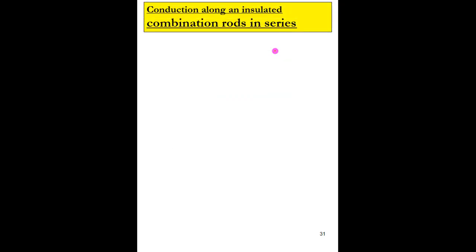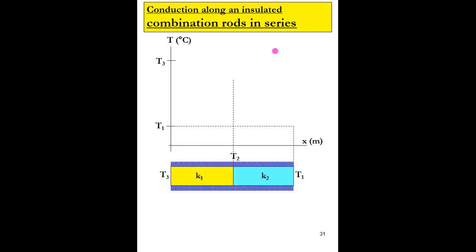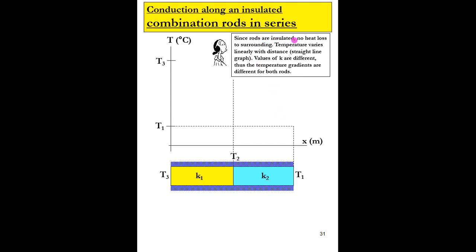For heat conduction along an insulated combination rod in series — a well-insulated rod made of two different materials — since the rod is insulated, there will be no heat loss to the surrounding. The temperature will vary linearly with distance, so we are going to have a straight line graph.